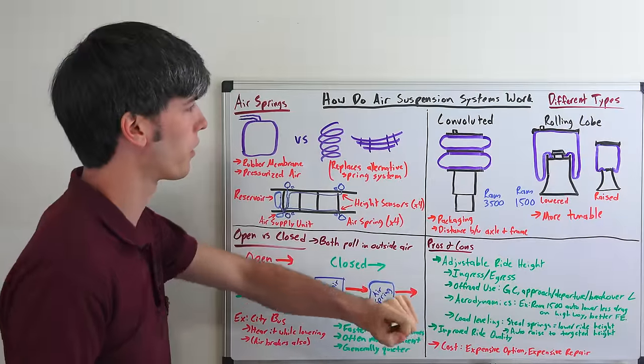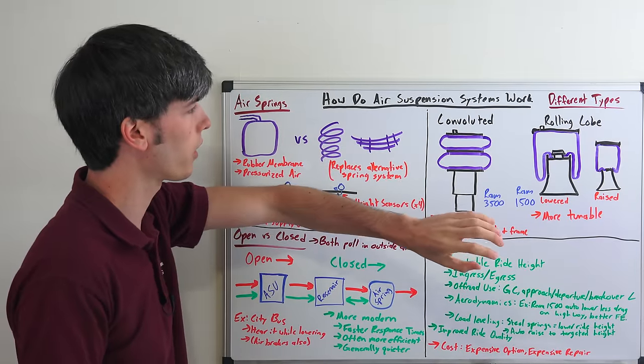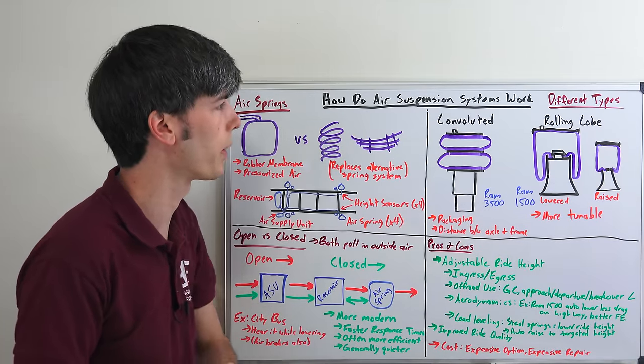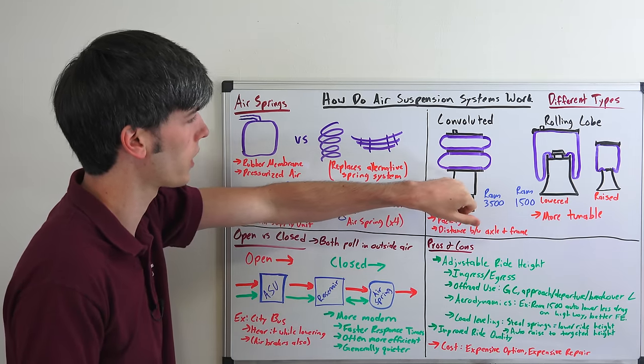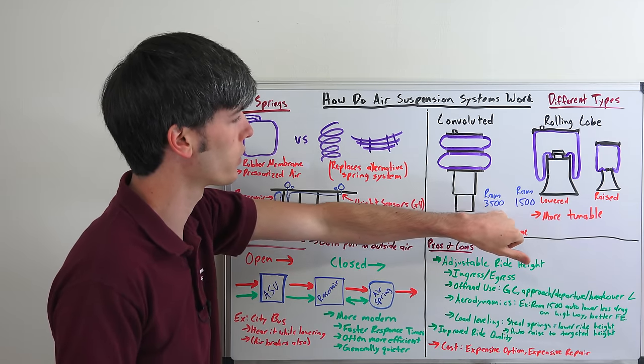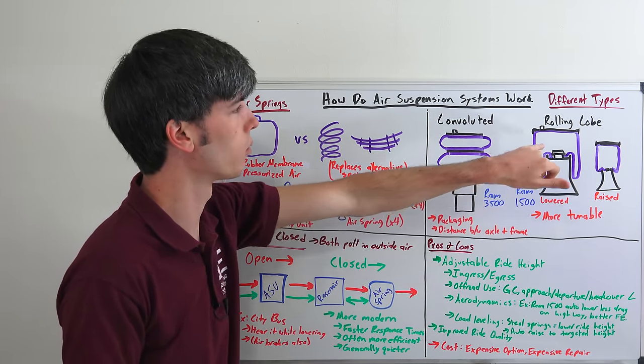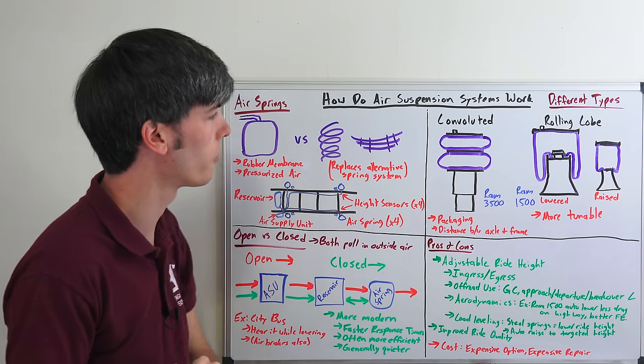So what are the different types of air springs? We've got the convoluted air spring or we have the rolling lobe air spring, both of which you can see used in RAM products. For example, the convoluted they use in the rear suspension of the RAM 3500, the rolling lobe they will use in the RAM 1500.